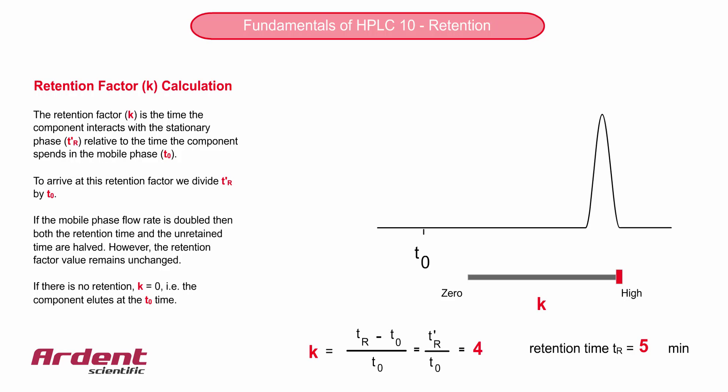If the retention time is 10 minutes and the unretained time is 2 minutes, then the adjusted retention time must be 8 minutes, simply 10 minus 2.